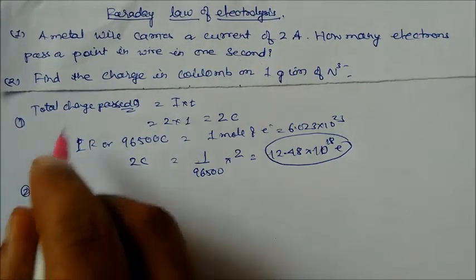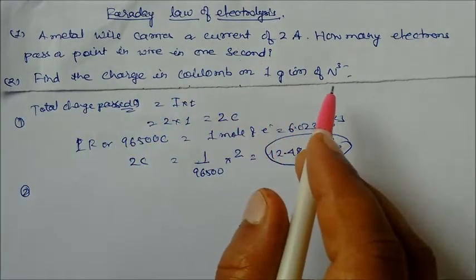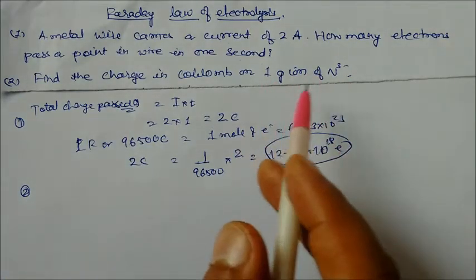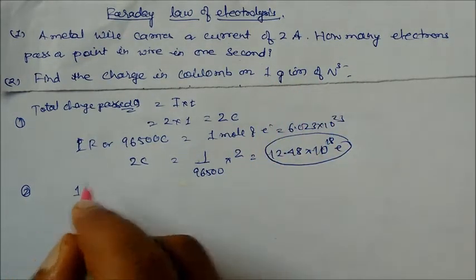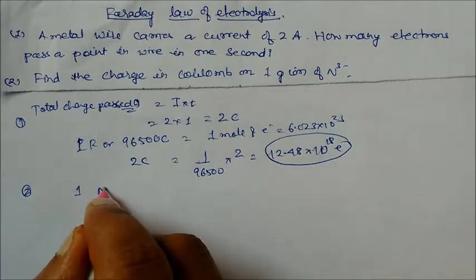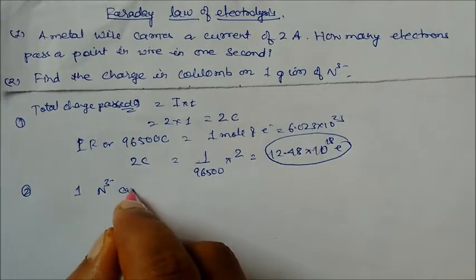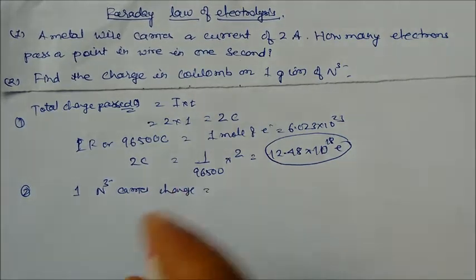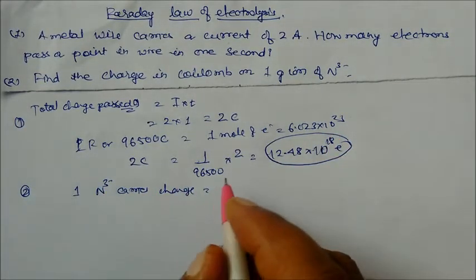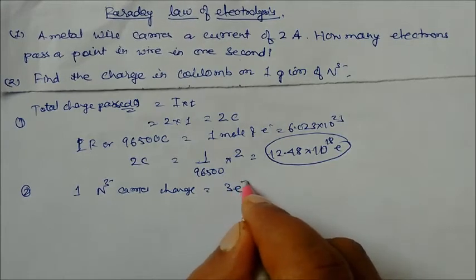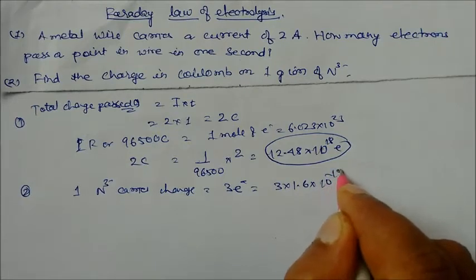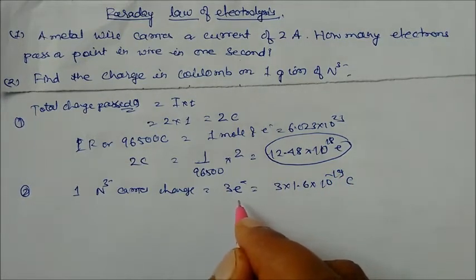Question 2: Find the charge in coulombs on one gram ion of nitride. First, one gram ion means one mole. So we find the charge on one nitride ion. One nitride ion carries three negative charges, meaning three electrons. So total charge = 3 × 1.6 × 10⁻¹⁹ coulomb, since charge of one electron is 1.6 × 10⁻¹⁹ coulomb.